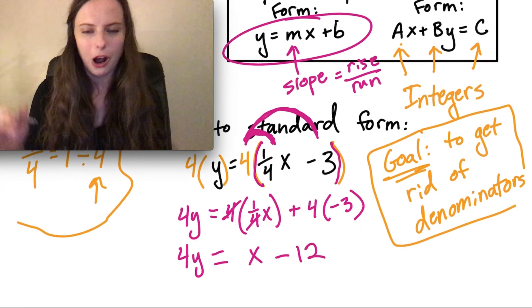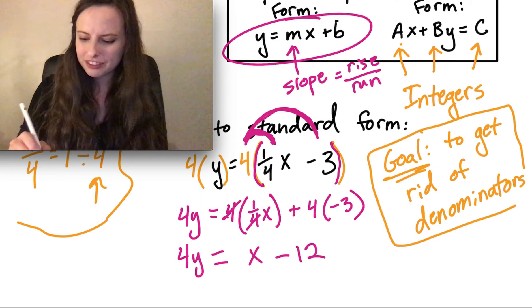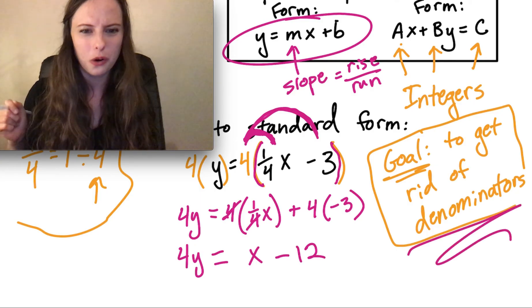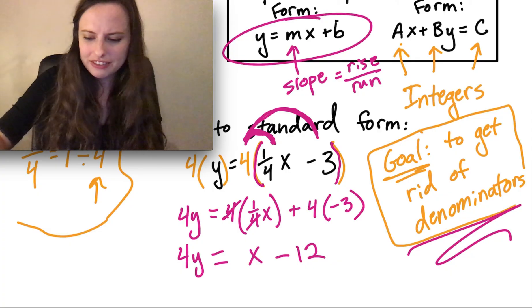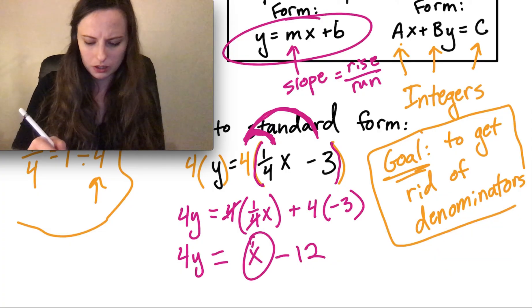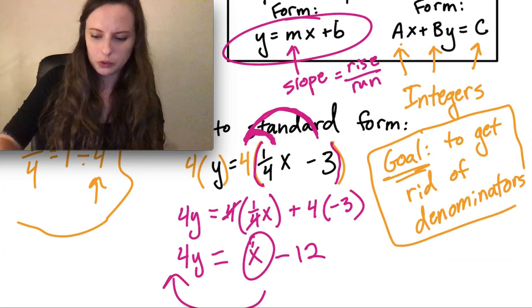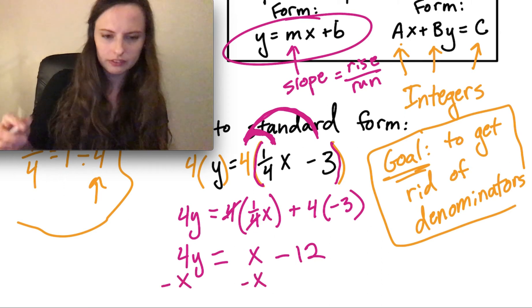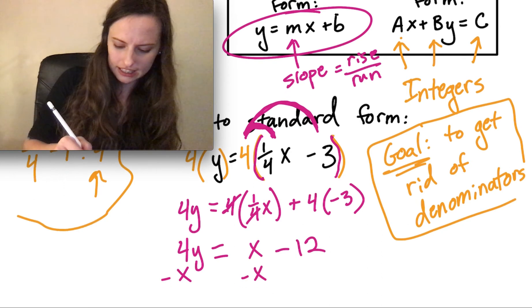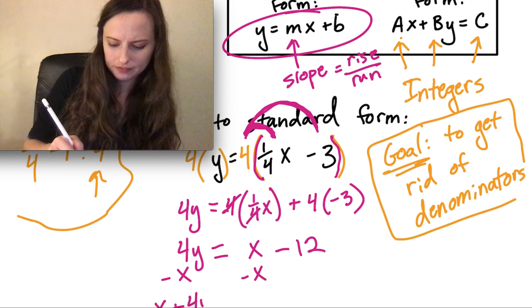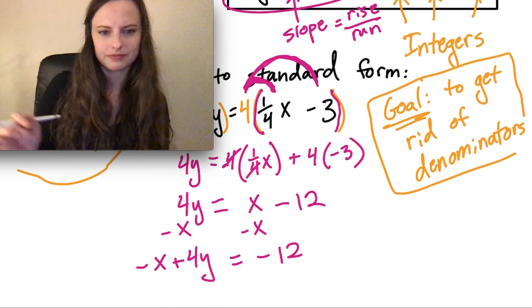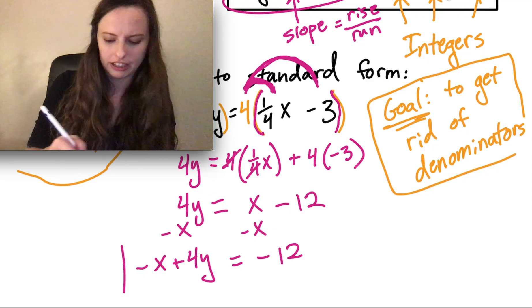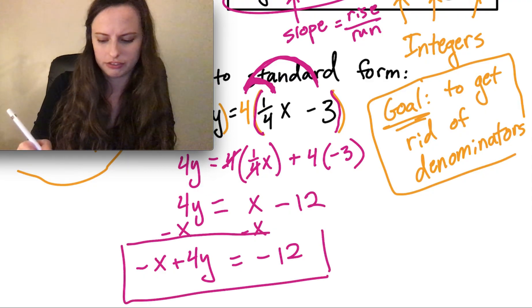We're almost done. At this point, the hard part is over. We got rid of the denominators. We achieved our goal. Now, all that's left is to move this x term to be with the y. So we'll do that by subtracting x from both sides, leaving us with negative x plus 4y equals negative 12. And that's our final answer in standard form.